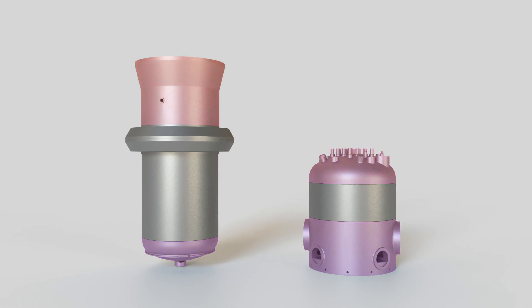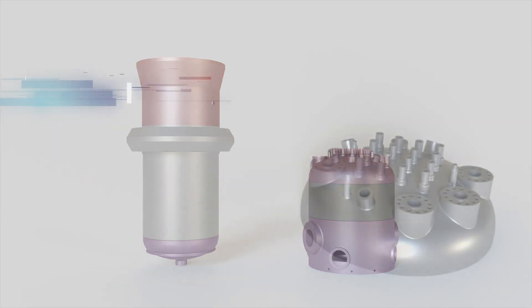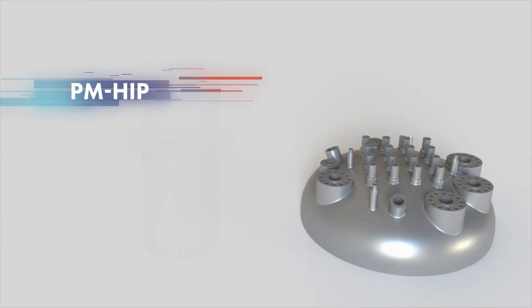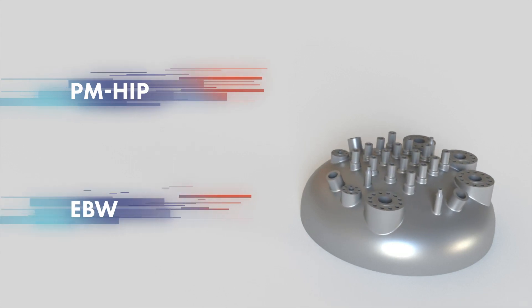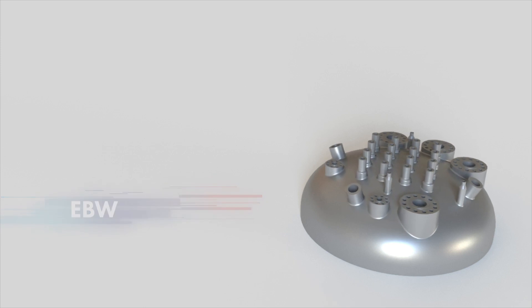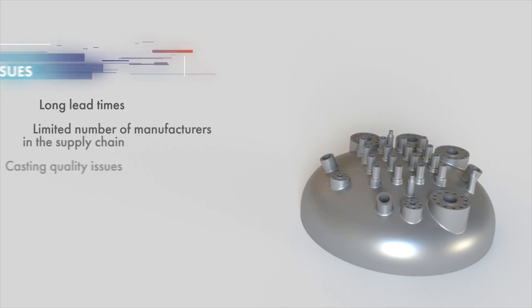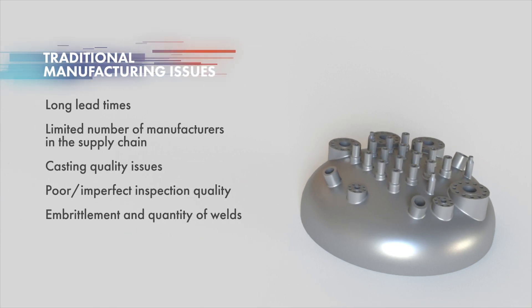Here's a quick overview demonstration of how powder metallurgy, hot isostatic pressing, commonly referred to as PMHIP, and electron beam welding technologies are being used to address various difficulties presented by traditional manufacturing techniques.